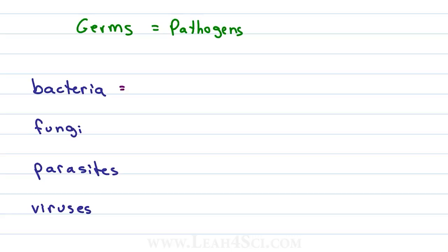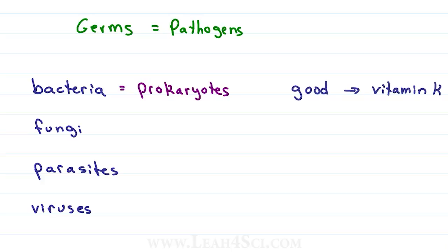Bacteria, which are unicellular prokaryotes, are not all bad — only some are pathogenic. For example, you have millions of bacteria living in your intestines producing vitamin K, which is helping you survive. But then we have a small amount that are pathogenic and responsible for the E. coli that keeps popping up, scaring everyone from eating lettuce.